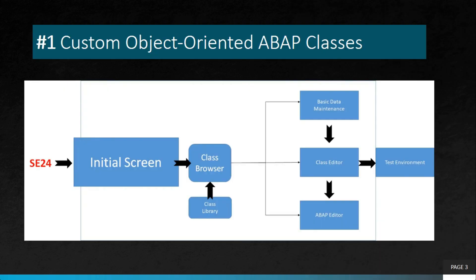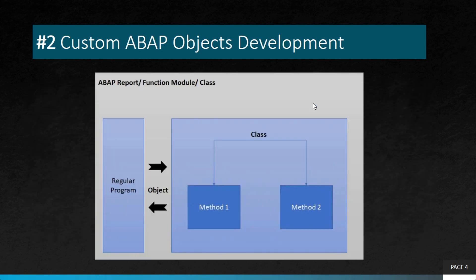The very first project in our list is custom object-oriented ABAP classes. We have also written an article covering all these projects — the link is in the description. Developers can create custom ABAP classes using object-oriented programming, and these classes can be used to encapsulate business logic and perform complex operations. Custom classes can be designed to meet specific business needs and reused across multiple applications. If you are using OOP within an ABAP report, classes and objects are local and can be developed in SE38, but for global classes you use transaction SE24.